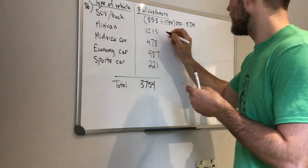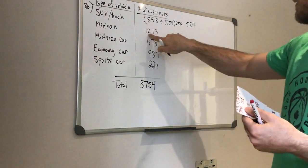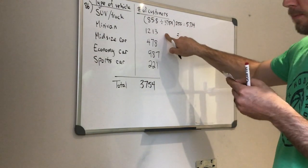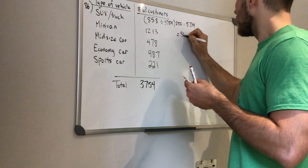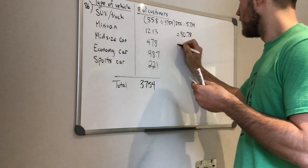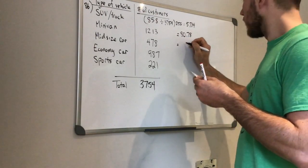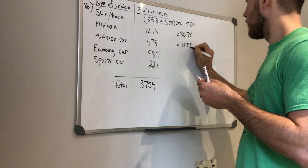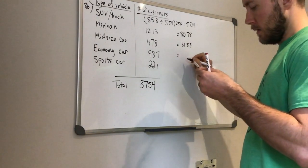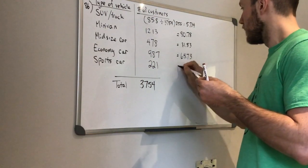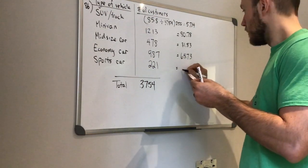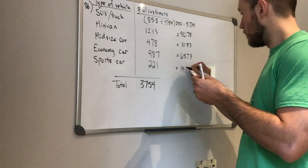If we do the same thing for each of these, so divide by the total and multiply it by 250, we are going to get 80.78, we are going to get 31.83, 65.73, and 14.72.